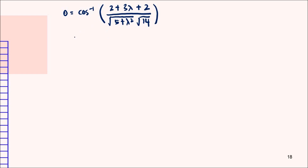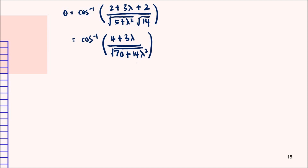The next step is to simplify further. We have cos inverse of (4 + 3λ) divided by √(70 + 14λ²) — obtained by multiplying the two square roots together. This value is already given as cos inverse of 1 over √84.